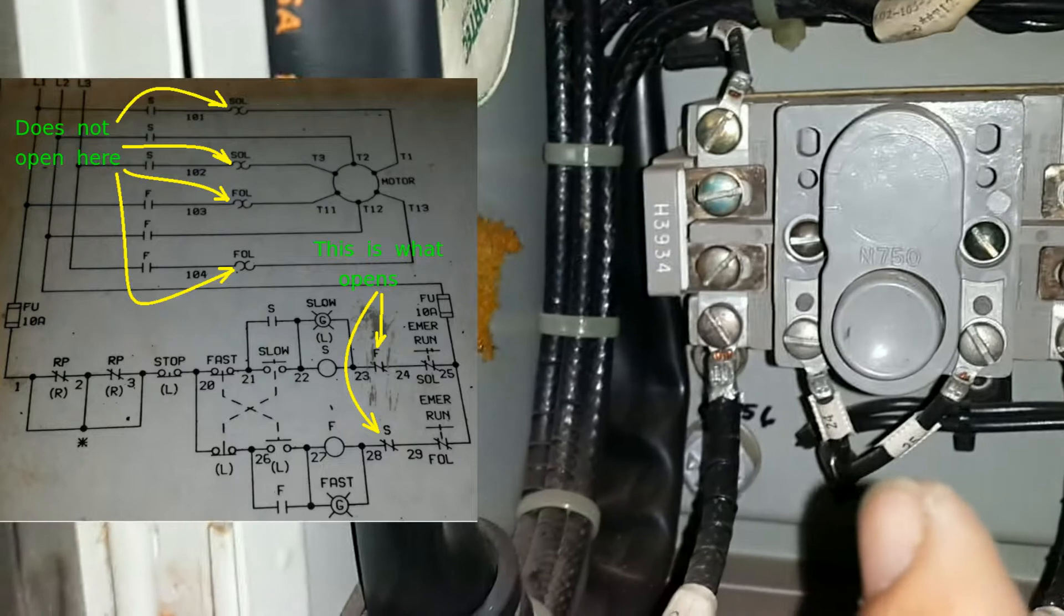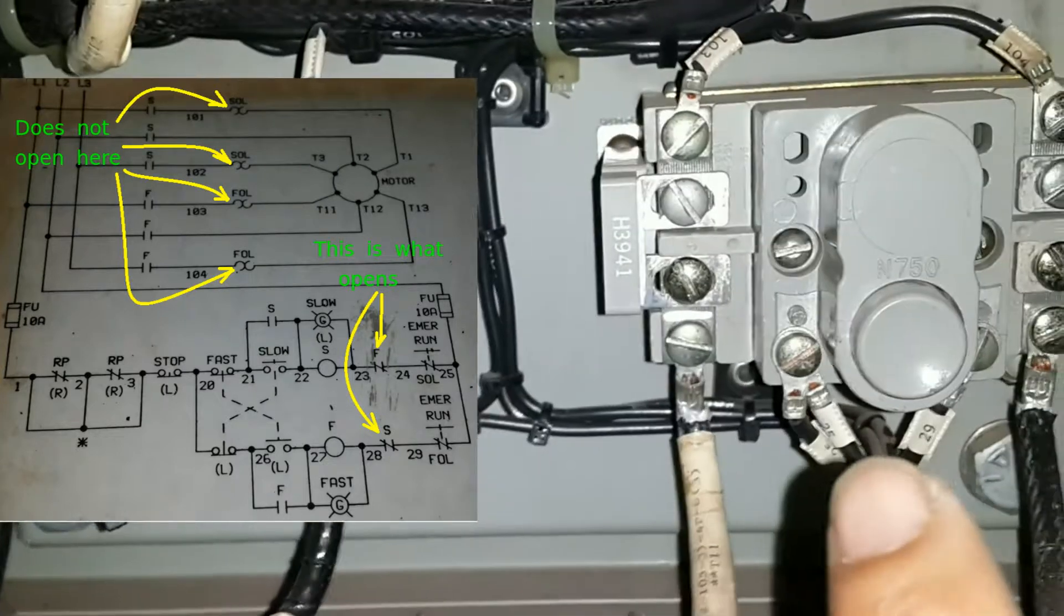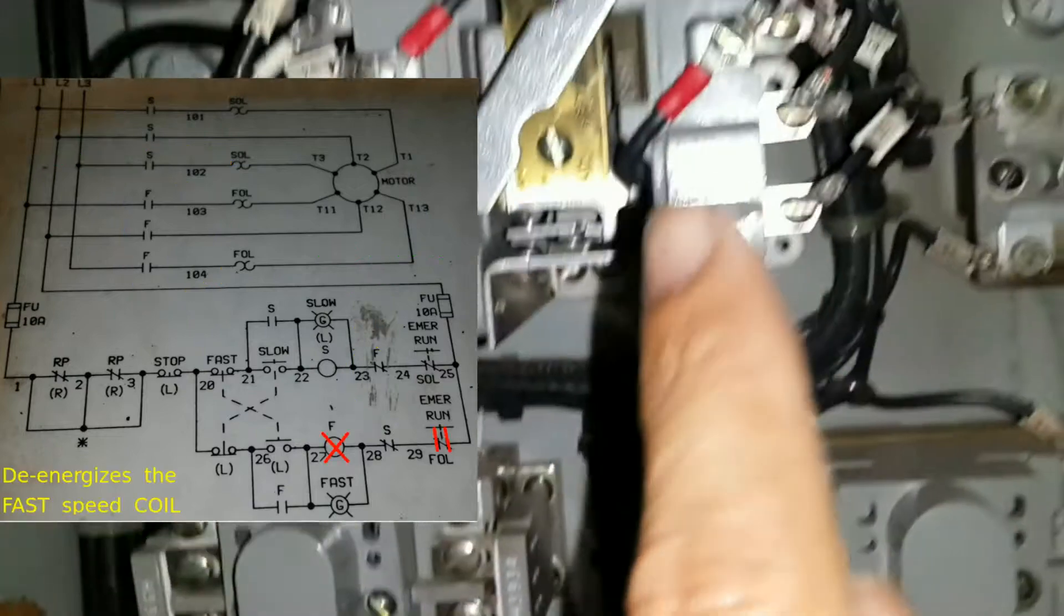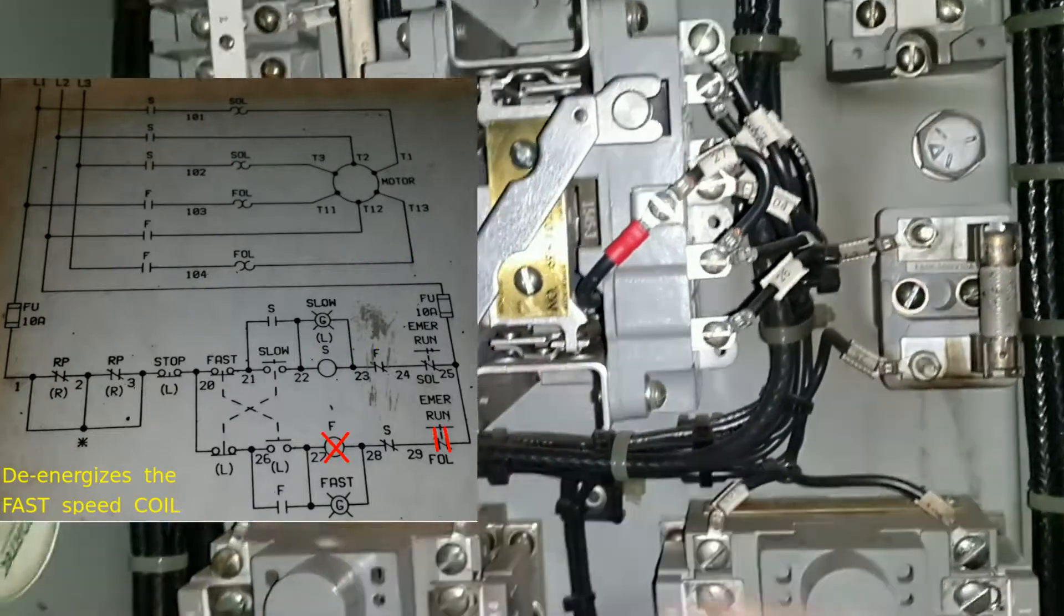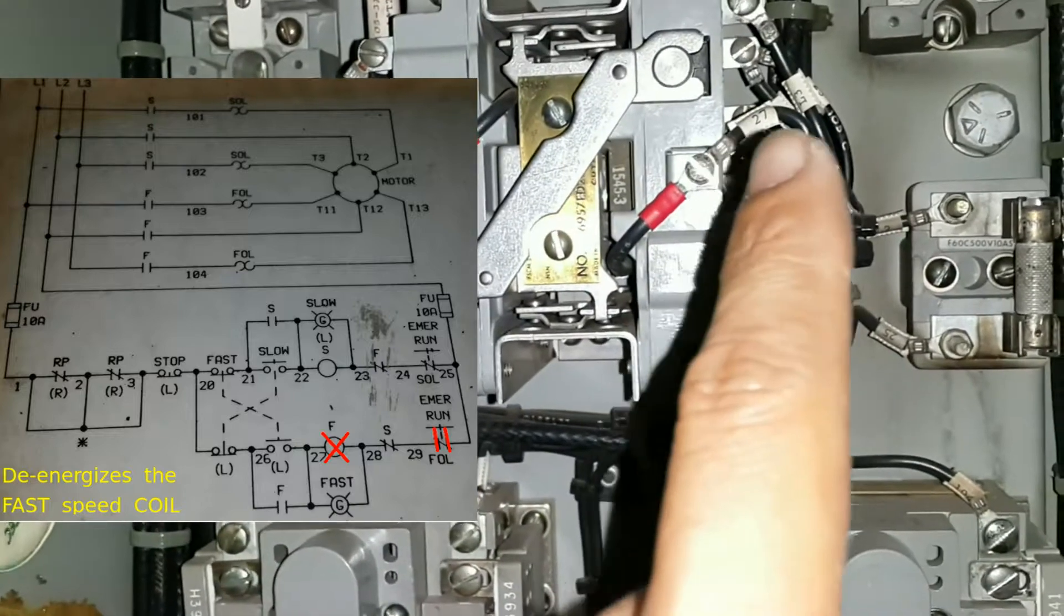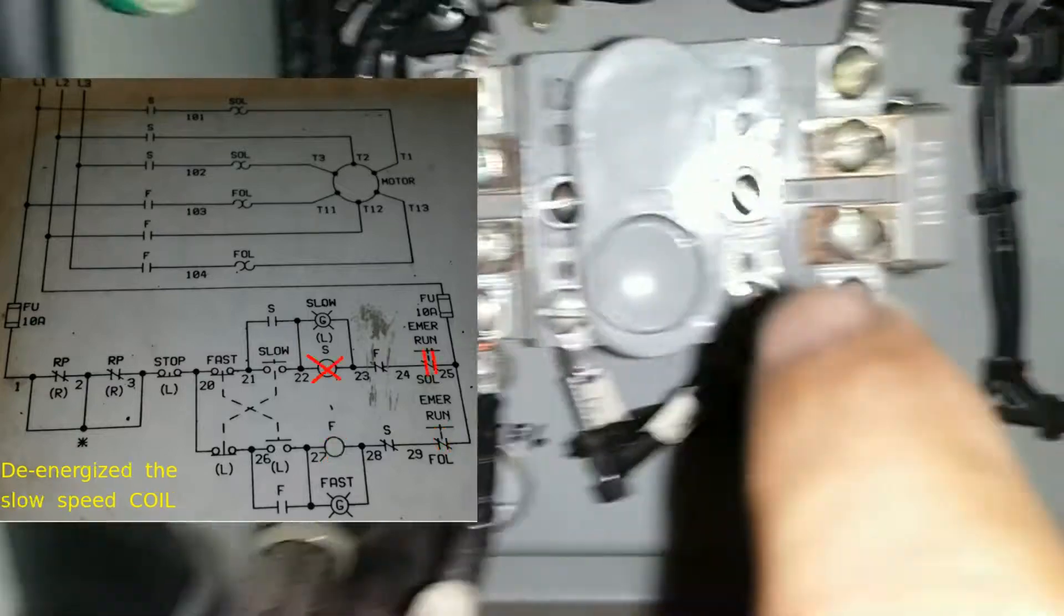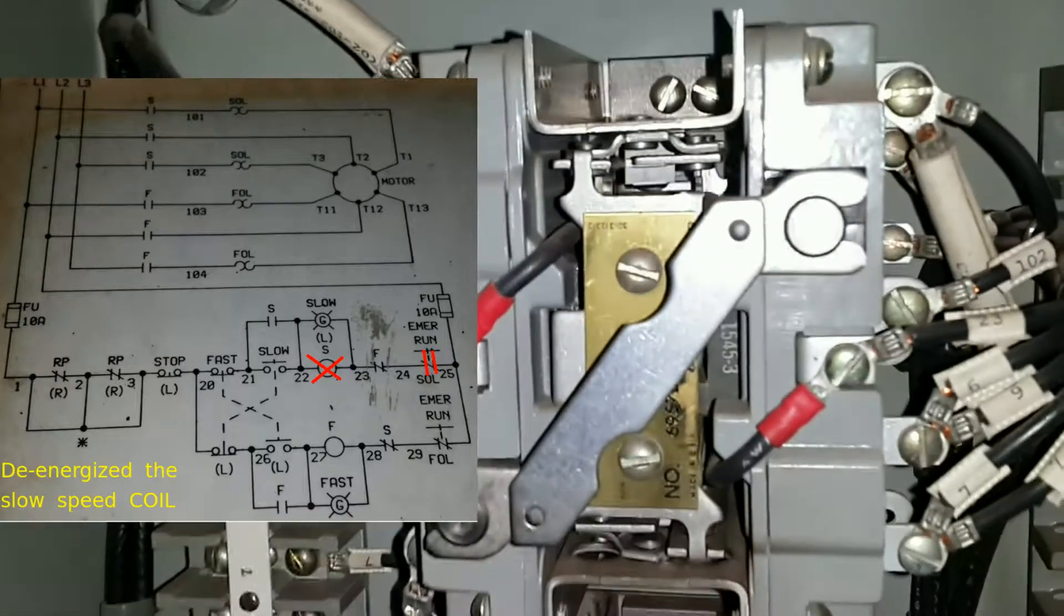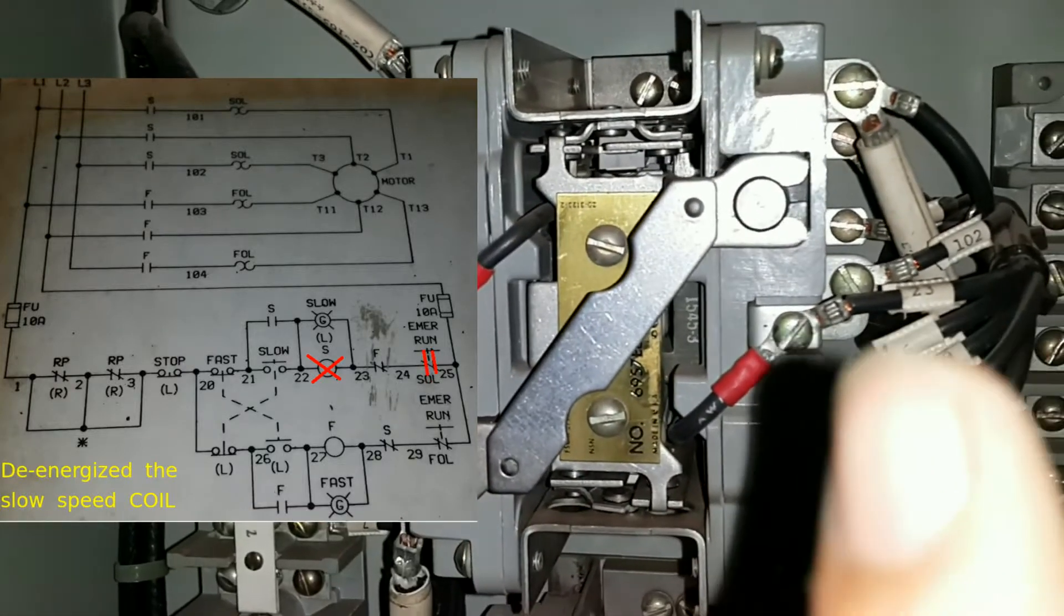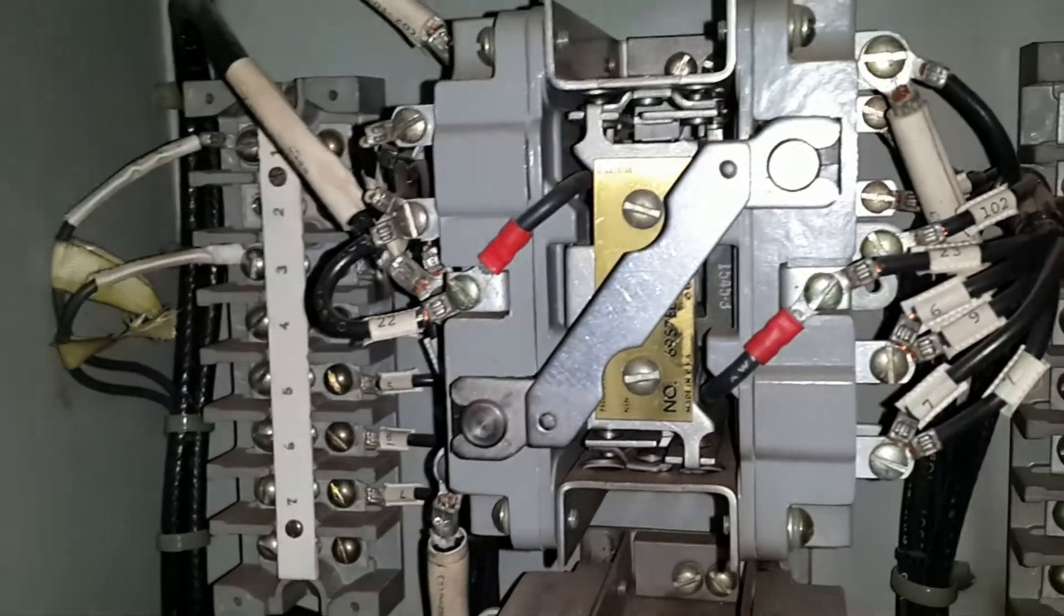And this one, when it opens as you see, it will stop the fast speed because that's the one that is given power. It's in series with 27 and 28. However, this one over here, 24 and 25, is in series with this contactor coil.